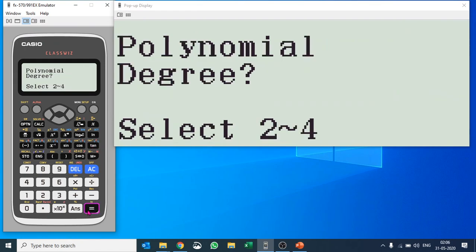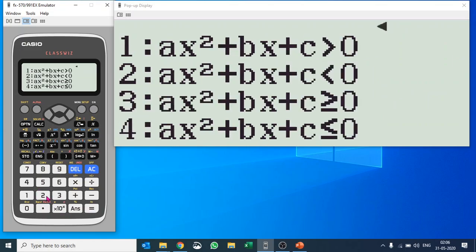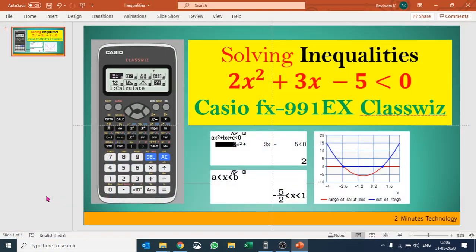I will go to inequalities. Our polynomial degree is 2, and our equation is 2x² + 3x - 5 < 0.